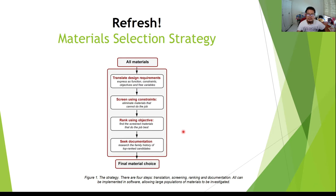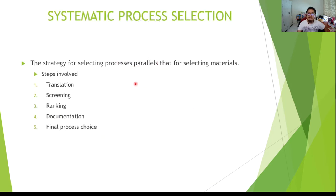Finally, we arrive at the final material choice — either a singular choice or a range of options. We also need to apply this to process selection, as the strategy parallels material selection: we start with translating the design requirements, then screen processes that cannot meet the constraints, rank them by objective with documentation, and arrive at the final process choice.